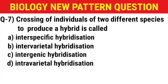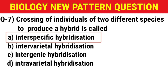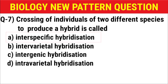Next question: Crossing of individuals of two different species to produce a hybrid is called — (A) intraspecific hybridization, (B) intervarietal hybridization, (C) intergenic hybridization, (D) intravarietal hybridization. The correct answer is option A: intraspecific hybridization.